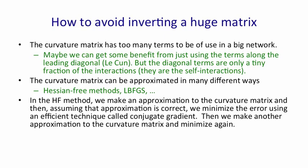In the Hessian-free method, we make an approximation to the curvature matrix and then we assume that the approximation is correct. So we assume we know what the curvature is and that the error surface really is quadratic. Then, starting from wherever we are now, we minimize the error using an efficient technique called conjugate gradient. Once we've got close to a minimum on this approximation to the curvature, we then make another approximation to the curvature matrix and use conjugate gradient to minimize again.